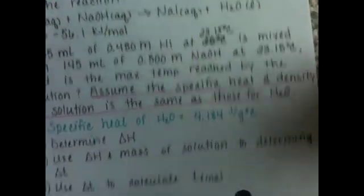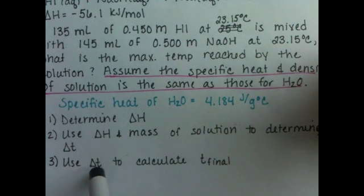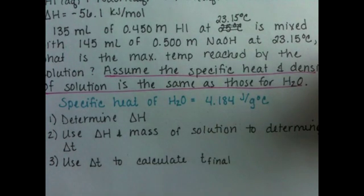And then once we've figured out ΔT, we're going to say, well, here's our initial temperature, and this is how much our temperature changed, so let's calculate what the final temperature is.